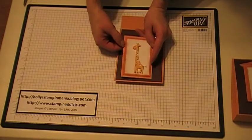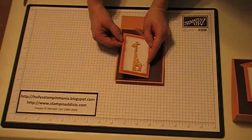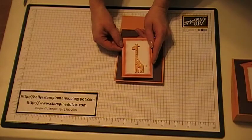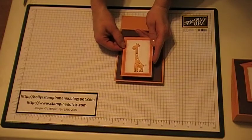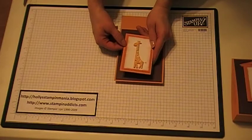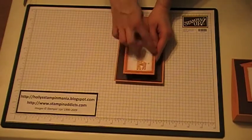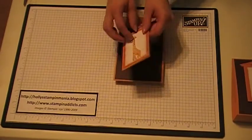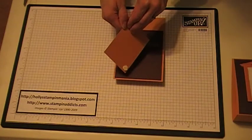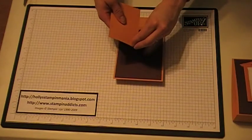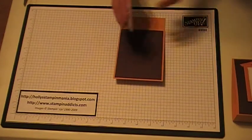Then I cut a piece of pumpkin pie to two and a quarter by three and a quarter and then a piece of more mustard to two and a half by three and a half and I layered them on. Then I took the chocolate chip ink and I sponged around the edges just to finish it off. Then I put some dimensionals on the back because I wanted this to pop up off the front of my box.